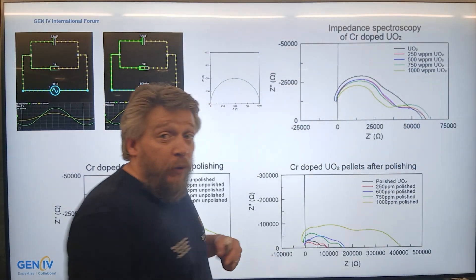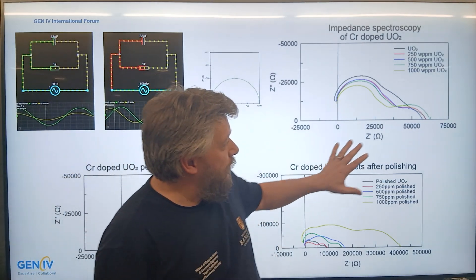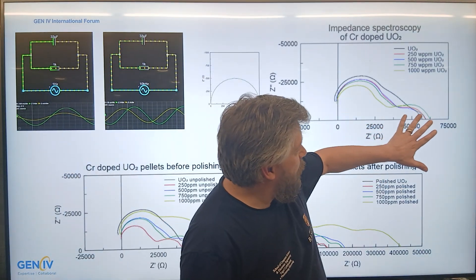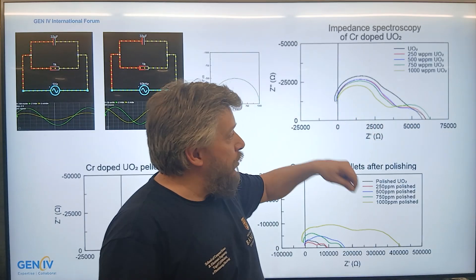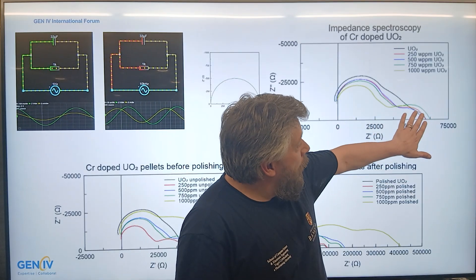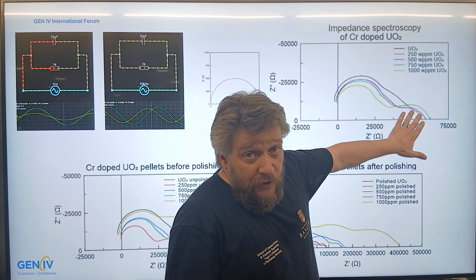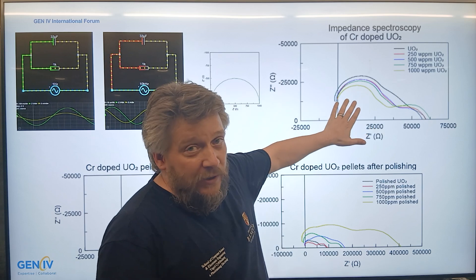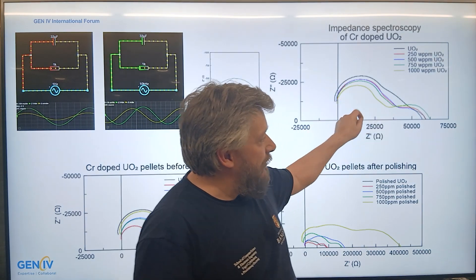When we put it onto a polycrystalline material we end up with two arches. That's what we expect to see with a polycrystalline material because you have two modes for the charge to be carried through the material. The right hand side is what you'd have for the grain boundary of the material and then on the left hand side is the bulk of the material in its entirety.